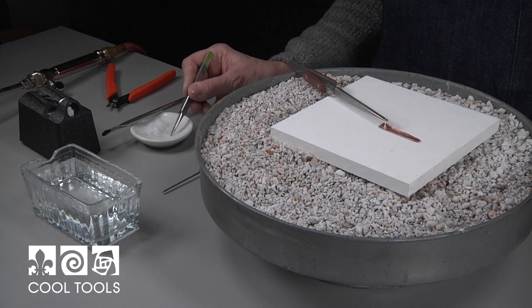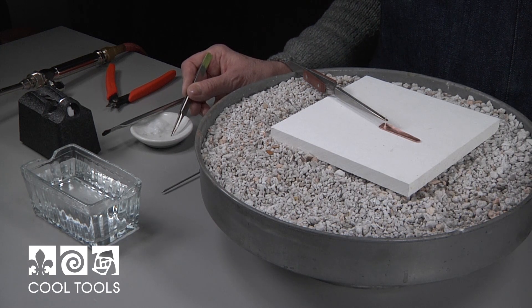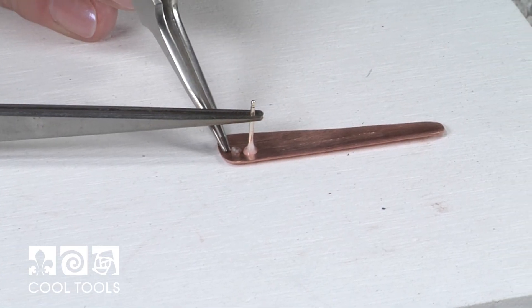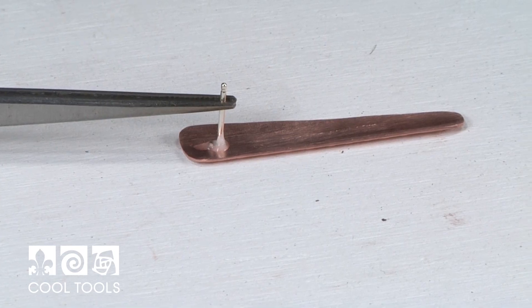I'm going to pick up a small pallion of solder. This is a small join so you don't need a lot of solder and I'm going to place it on the back side of this post. It has to be touching both the post and the back plate.